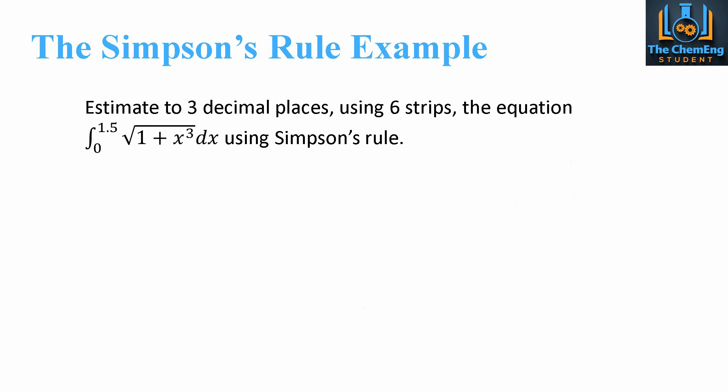Now, let's take a look at an example here. So, it asks us to estimate. So, again, we have this word estimate. We can't determine, but we can estimate the value. To three decimal places using six strips. The equation of the integral between zero and 1.5 of the square root of one plus x cubed dx. And we have to use the Simpson's rule. Now, if this was five strips or seven strips, we could not use Simpson's rule. Now, we'll find delta x exactly the same way as before. So, we take the total distance divided by the number of strips. So, that tells us this time that the width of our strips would be 0.25.